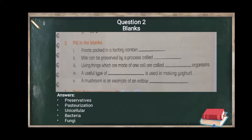Third blank: living things made of one cell. We studied in the first lecture that there are two types of organisms — unicellular and multicellular. The answer is unicellular. Fourth: a useful type of bacteria is used in making yogurt — the answer is bacteria. Fifth: a mushroom is an example of an edible fungi. We use fungi as a type of mushroom we can eat, but not all mushrooms are safe — some are harmful and poisonous.